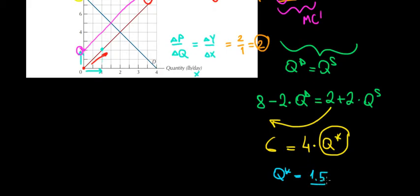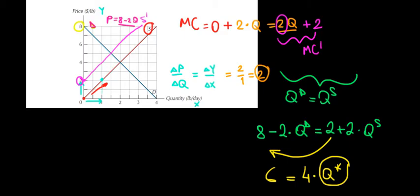Let's see if that corresponds to our graph. At 1.5, if we intersect the new supply with the demand, it would be at the level of 1.5 over here in the middle. So that works out.